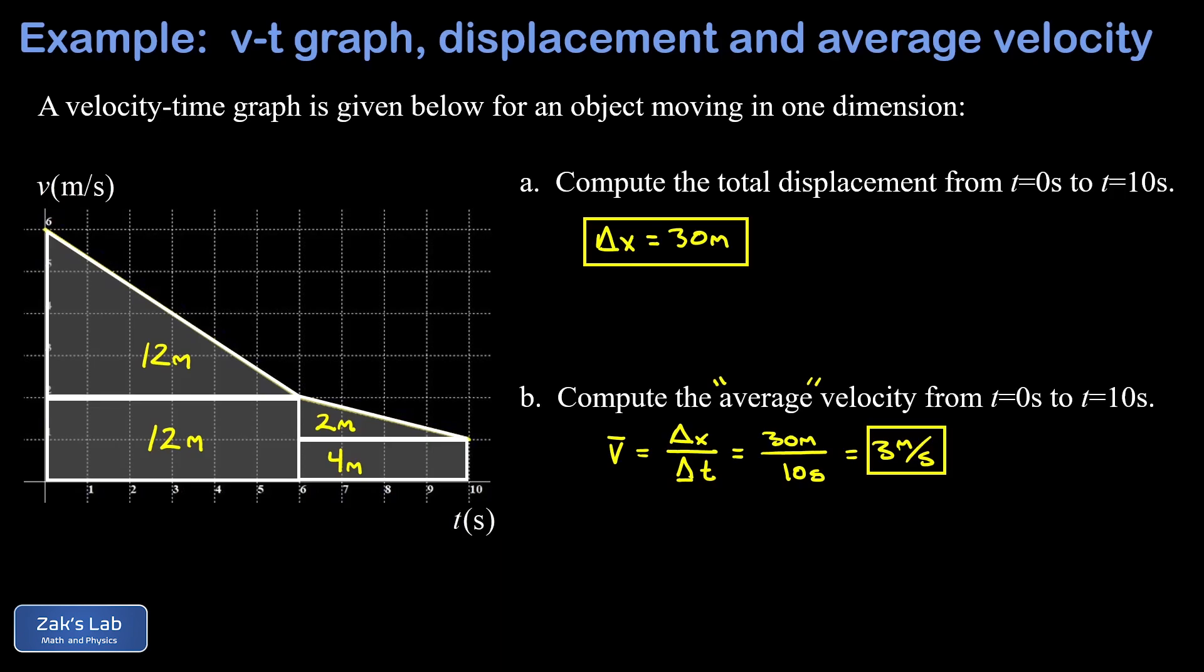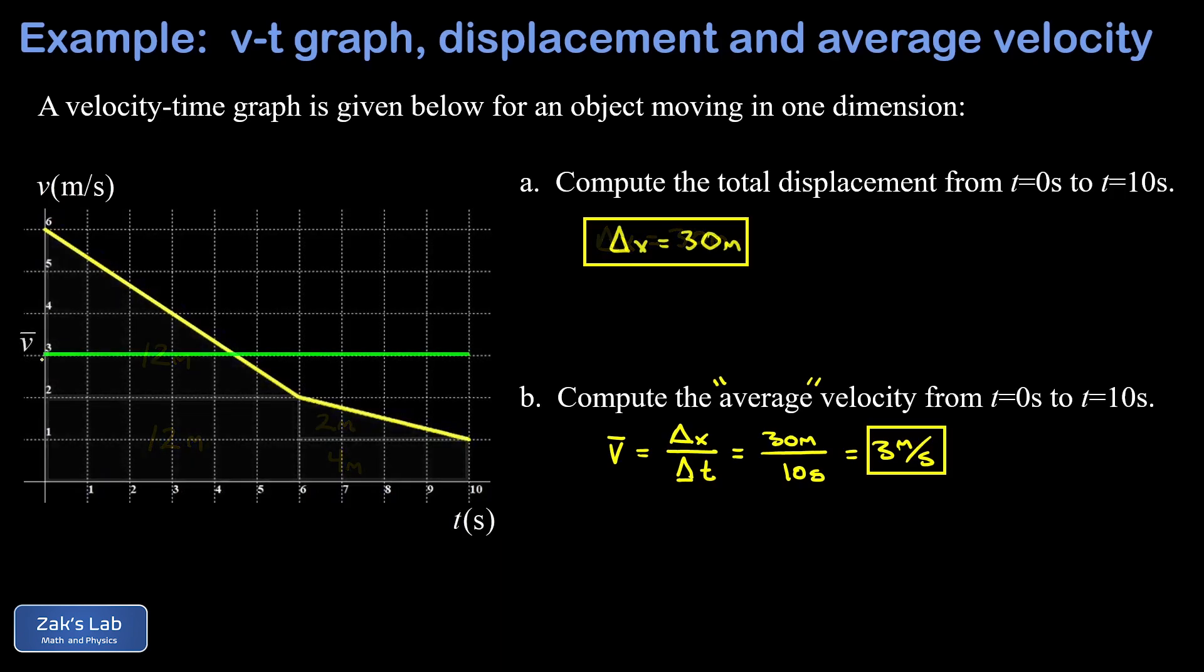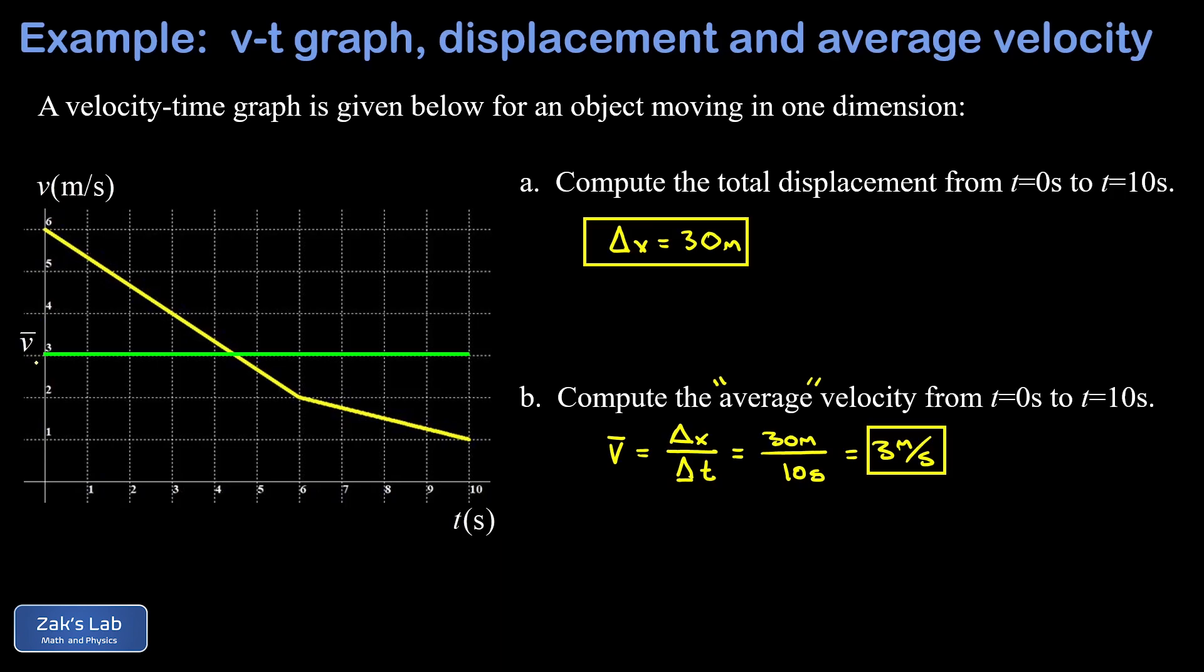I want to take a second to point out what the average velocity means in the velocity-time graph. There's our average velocity in the graph, and the physical interpretation of this is the speed that you would have to go to cover exactly the same displacement of 30 meters at a constant speed.